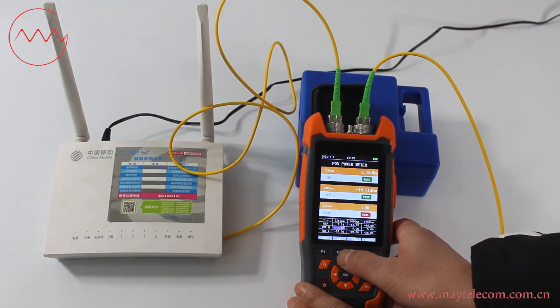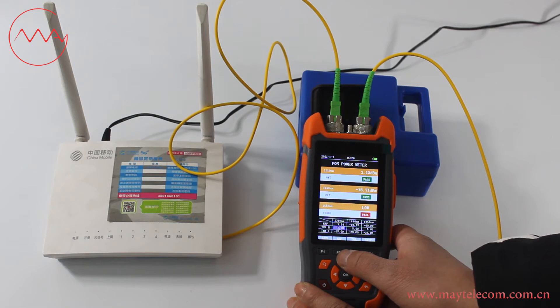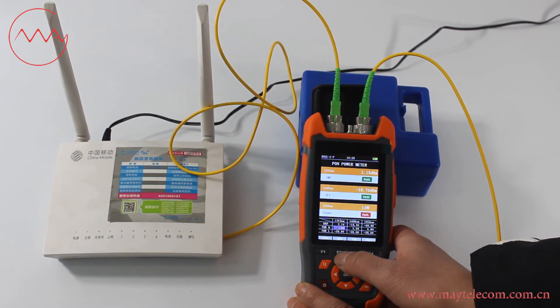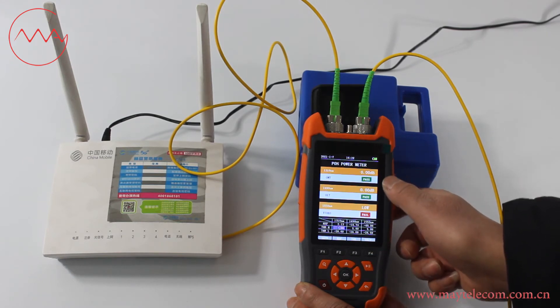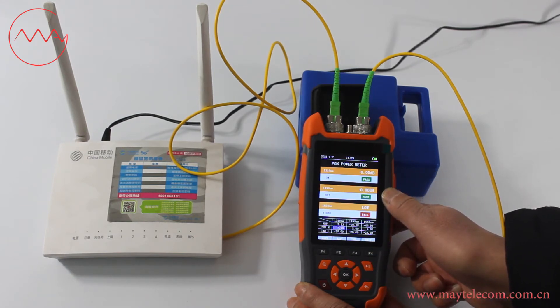When testing optical power at another location to know the relative power, press F2 key to set reference value. Press F4 key to check relative power in dB.